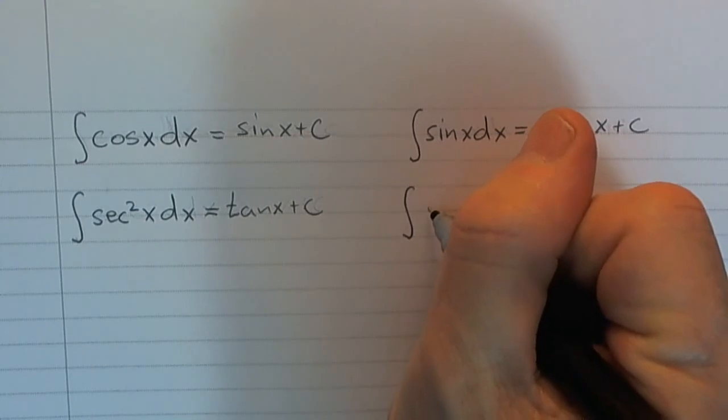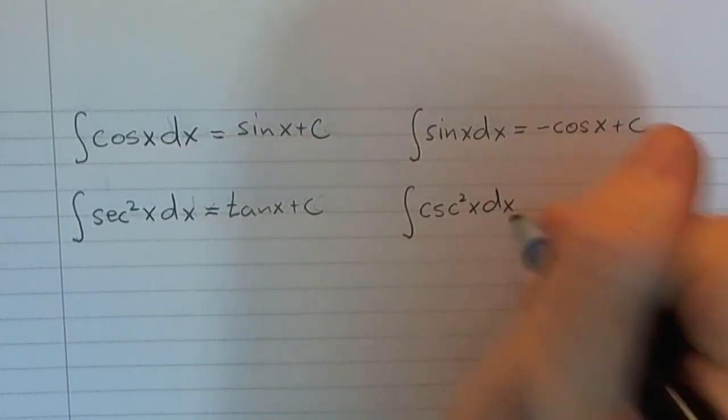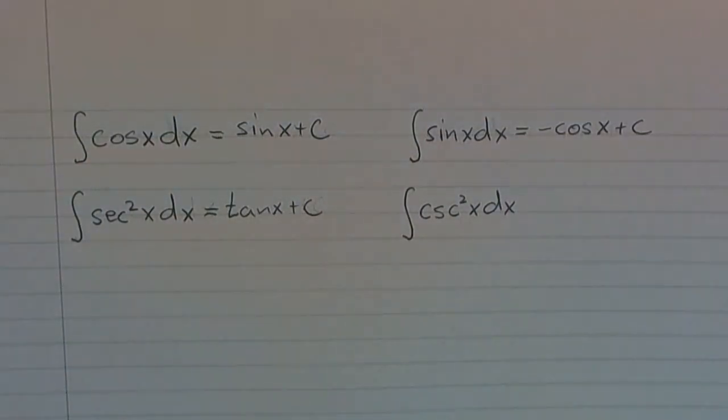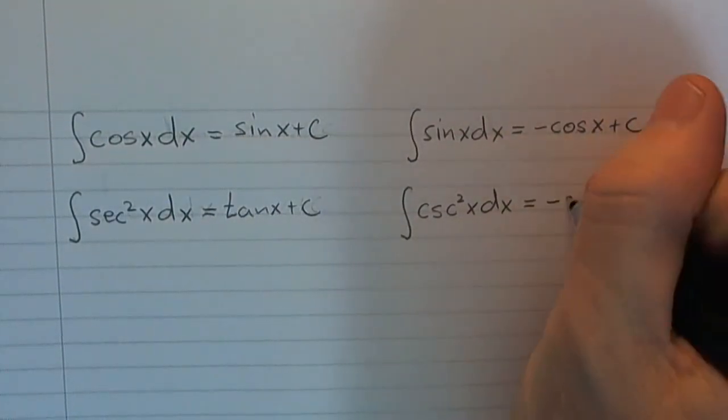Let's think about the antiderivative of cosecant squared. Now, remember, the derivative of cotangent is negative cosecant squared. So this one would be negative cotangent.